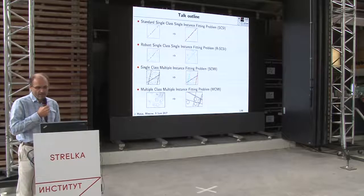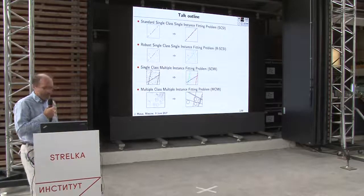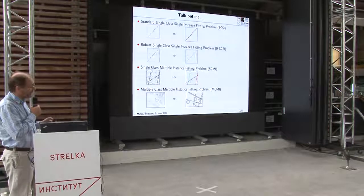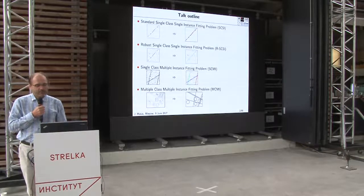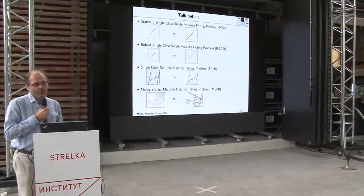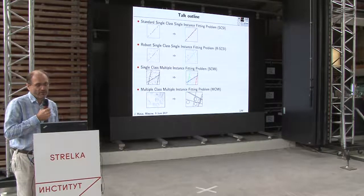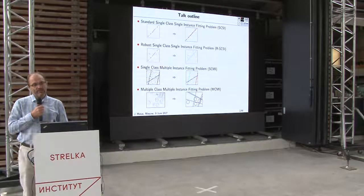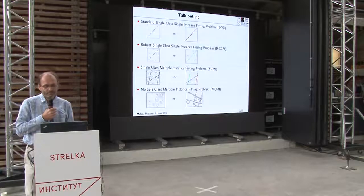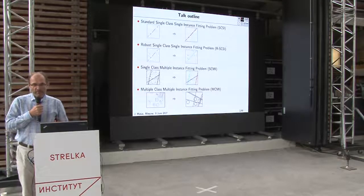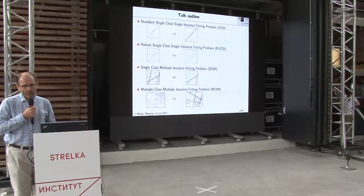The first class of problems, which I call single-class single-instance fitting, is something that most of you encountered at secondary school. You are given a set of points, maybe measured in a physics class, and you are supposed to fit a line that minimizes the sum of squares. This is called single class because the only thing you are fitting is lines, and single instance because you are asked to find one single line. This problem has a very old history and it's easy to solve in closed form.